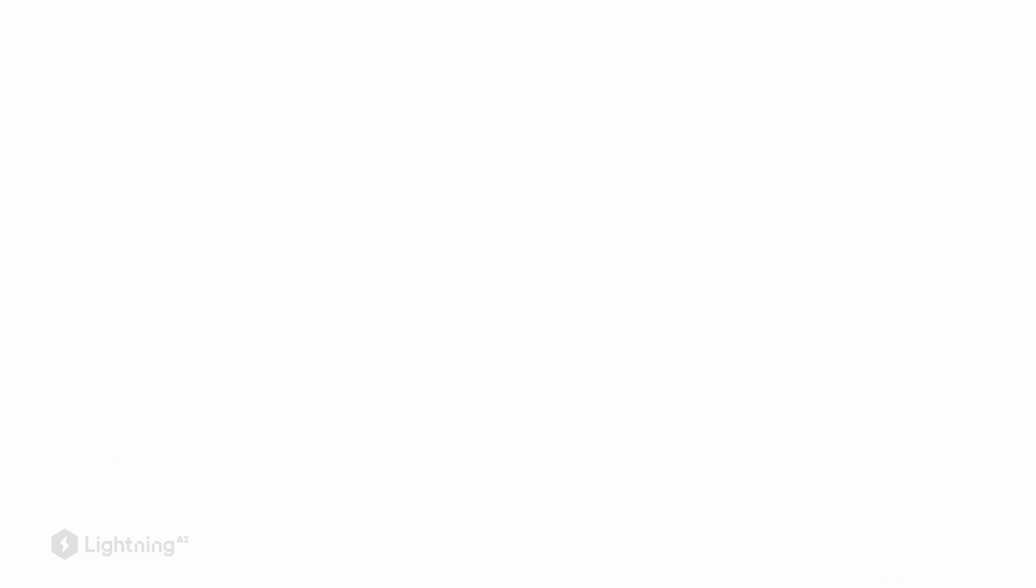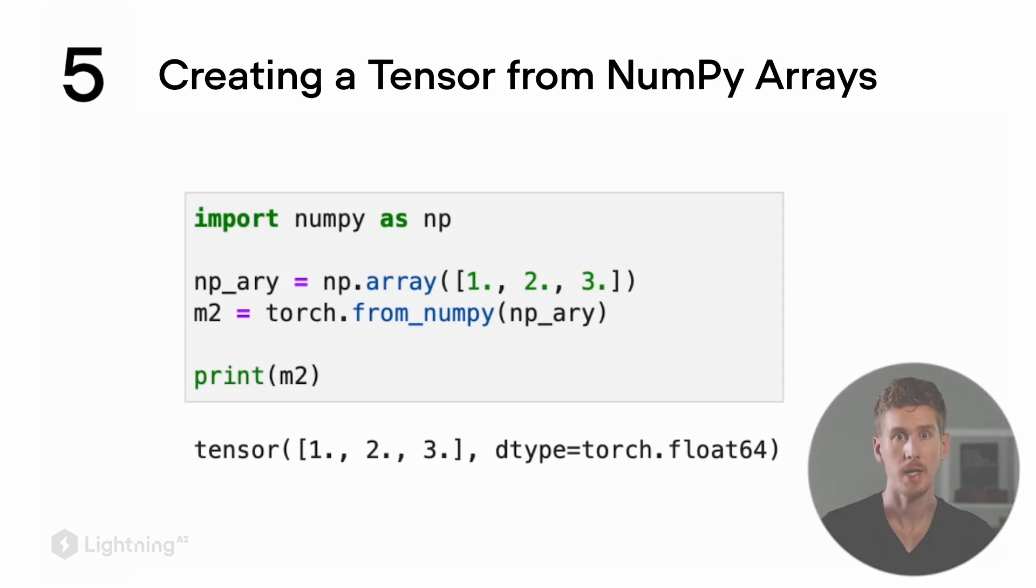Now that we've talked about checking the number of elements and precision of our tensors, let's see how we can convert a NumPy array into a tensor directly. PyTorch has the from_numpy function, which converts a NumPy array directly into a tensor. We can also call .tensor on a NumPy array, but this creates a copy in memory.